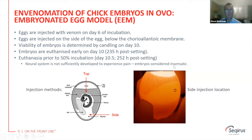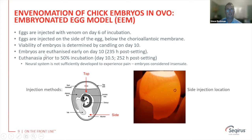We did this in various ways — we injected from the top, but eventually realized that a sideways injection was best. We start our injection on day six, through the chorioallantoic membrane. We then determine the viability of the embryos after day 10 — prior to the 50% gestation age — and euthanize these embryos early on day 10 to ensure no further development. The neural system is not sufficiently developed at this stage, so these embryos do not experience any pain and are considered insensate.